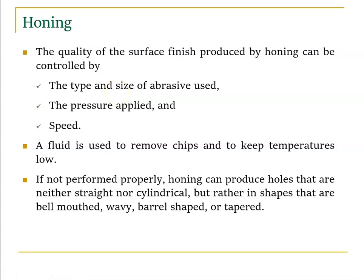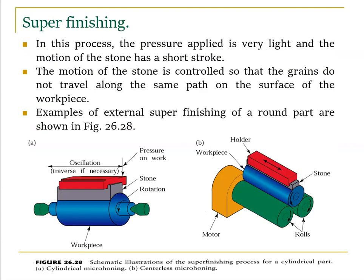The quality of surface finish produced by honing is controlled by the type and size of abrasives used, the pressure applied, and the speed. A fluid is used to remove chips and keep temperatures low. If not performed properly, honing can produce holes that are neither straight nor cylindrical but rather barrel-shaped, wavy, or tapered — damaging the internal surface.